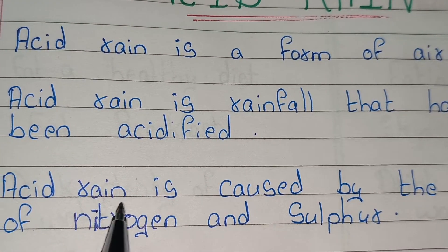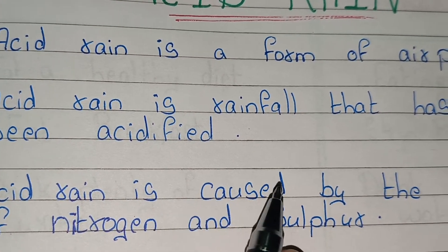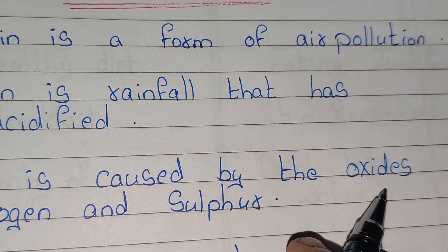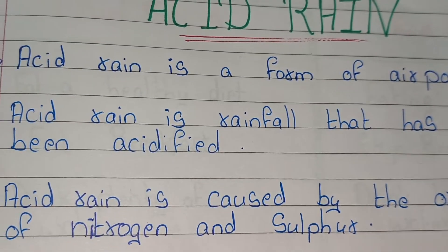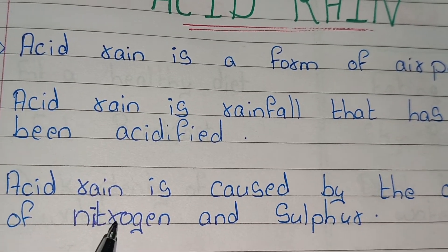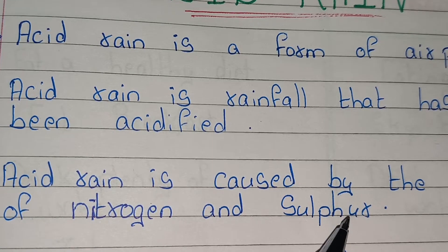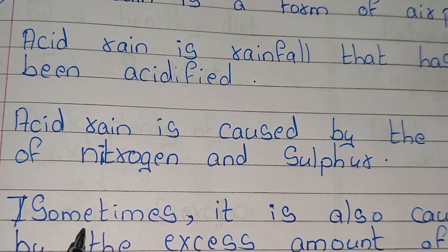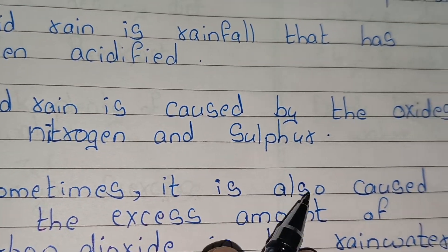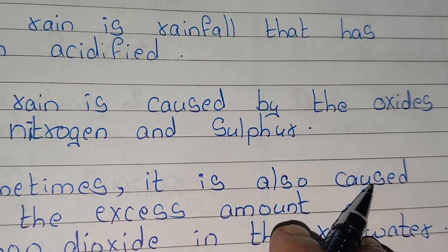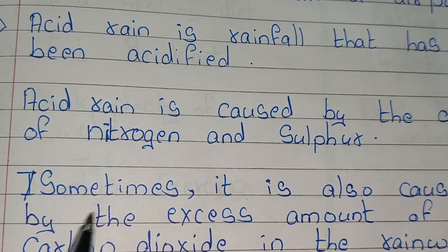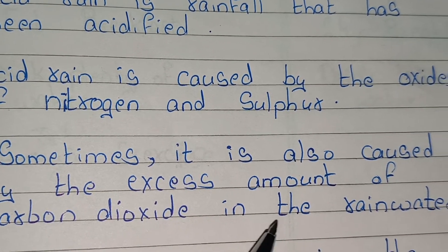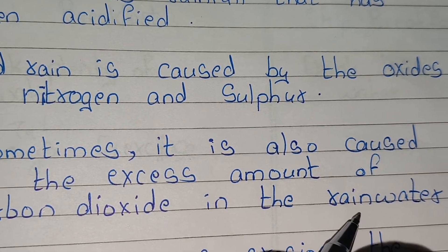Acid rain is caused by the oxides of nitrogen and sulphur. Sometimes it is also caused by the excess amount of carbon dioxide in the rain water.